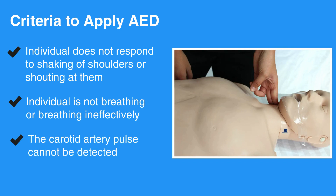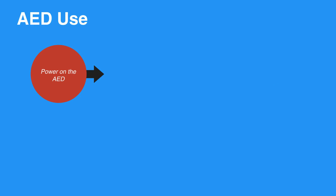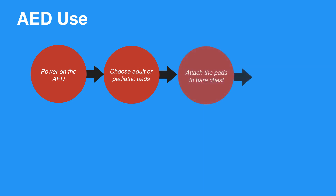Now let's review the basic steps of using an AED. First, power on the AED. Choose adult or pediatric pads. Attach the pads to the bare chest and make sure the cables are connected.